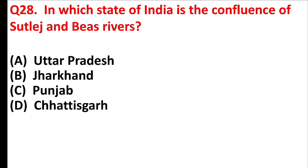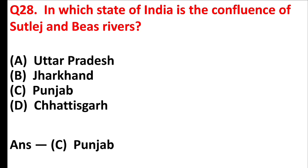In which state of India is the confluence of Sutlej and Beas rivers? Answer is option C, Punjab.